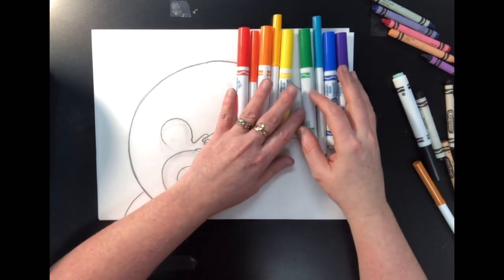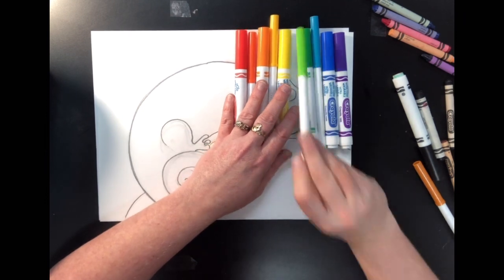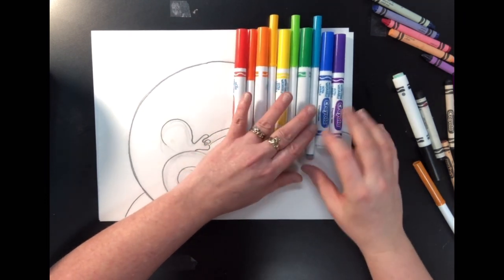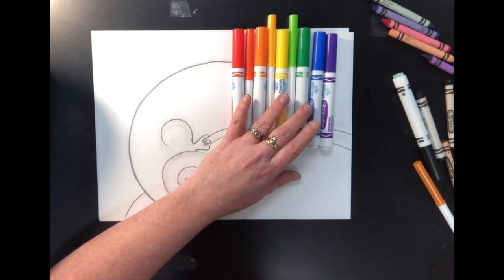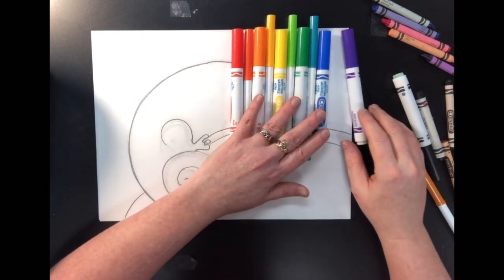And then yellow green, which kind of looks like lime. Right there. And then blue green, which is like a teal. And then blue violet.